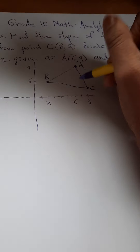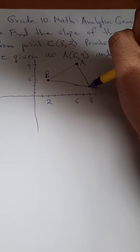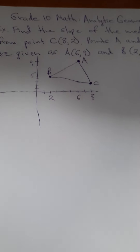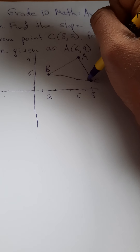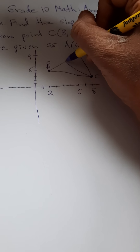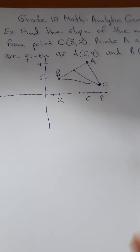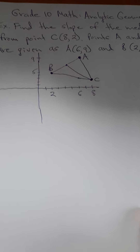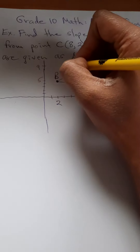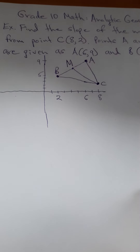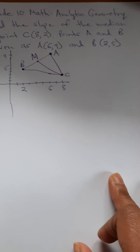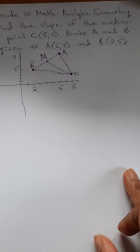The median always touches a vertex of the triangle and draws a straight line — use a ruler — to the midpoint of the opposite side. So here the median goes from point C to the midpoint of side AB. That's what we're solving for: the slope of this median.